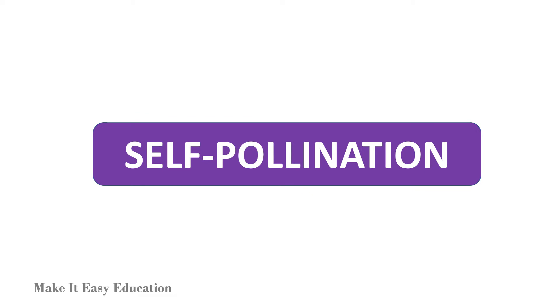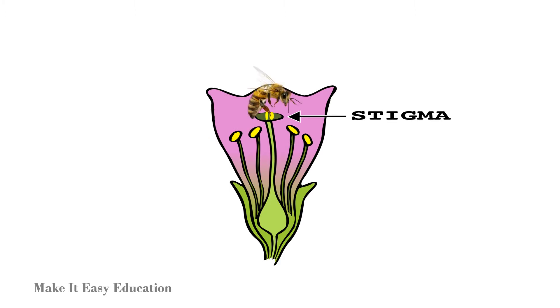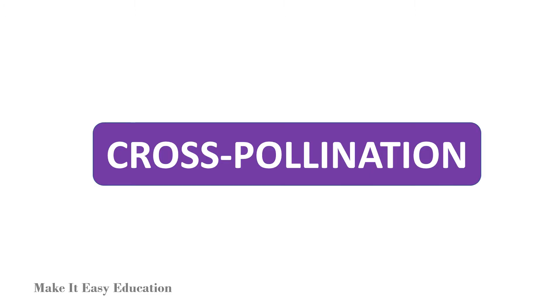Self-pollination. In self-pollination, the pollen from the anther of a flower is transferred to the stigma of the same flower, or the stigma of another flower on the same plant.